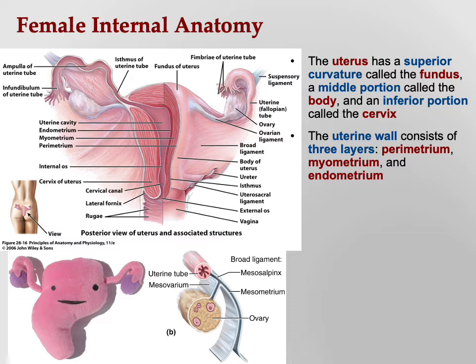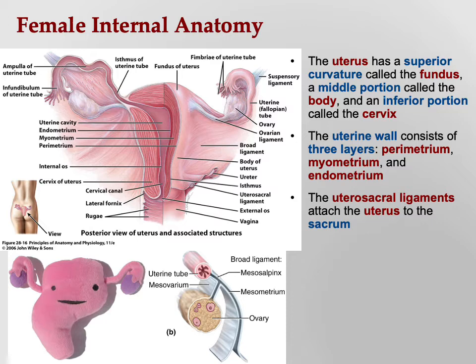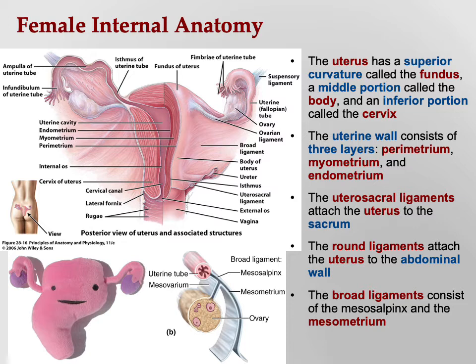The uterosacral ligaments attach the uterus to the sacrum, and round ligaments attach the uterus to the abdominal wall — just like wires holding things in position. The broad ligament, named because it is broad, consists of the mesosalpinx and mesometrium. To review: we have the ovary, the uterine tube with its fimbriae, infundibulum, ampulla, and isthmus, and the uterus with its fundus, body, and cervix.